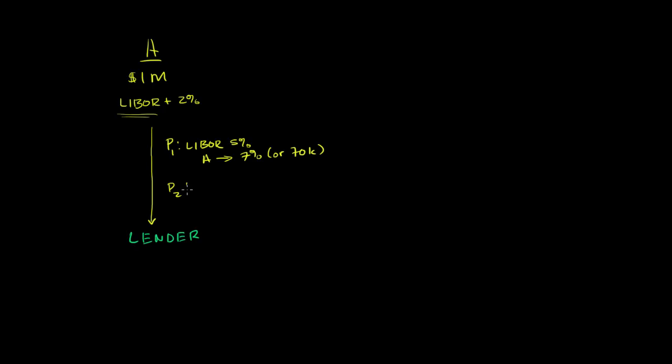In period 2, if LIBOR goes down a little bit to 4%, then Company A is going to pay 4 plus 2, which is 6%, or $60,000 in interest.